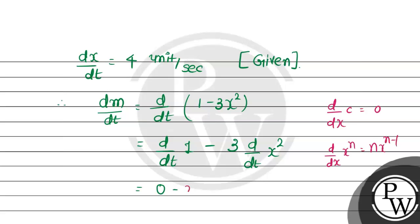so here it will be 3 as it is, 2 comes forward and x. But this is not only x, because x with respect to t will be dx upon dt.